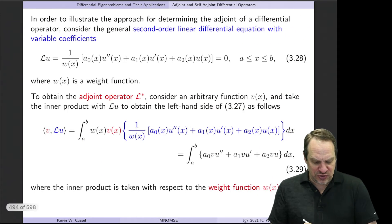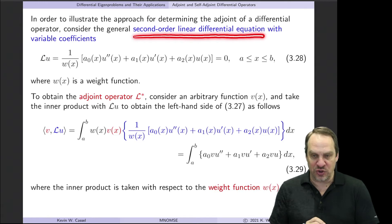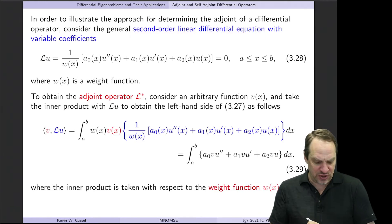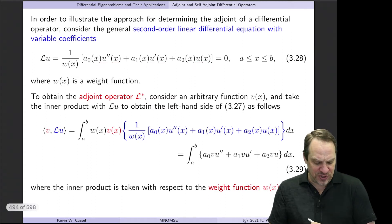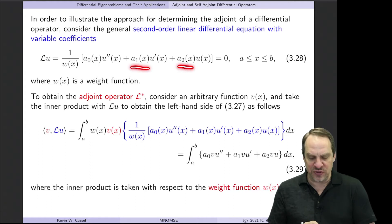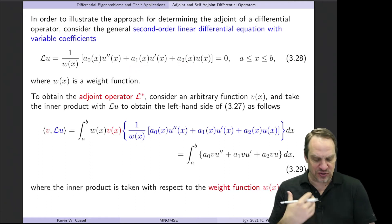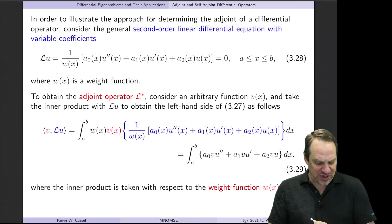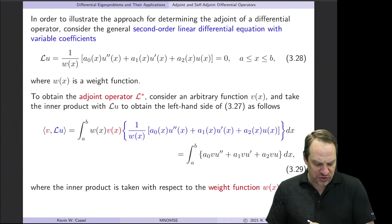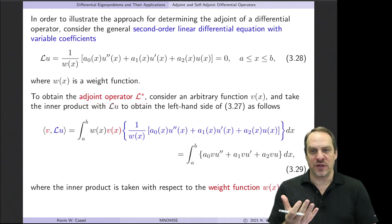I'll illustrate this using a general second-order linear ordinary differential operator with variable coefficients: L = (1/w(x))·[a0(x)·u'' + a1(x)·u' + a2(x)·u], where a0(x), a1(x), and a2(x) are general functions of x and w(x) is the weight function. We want to determine the adjoint operator L* for this given L.